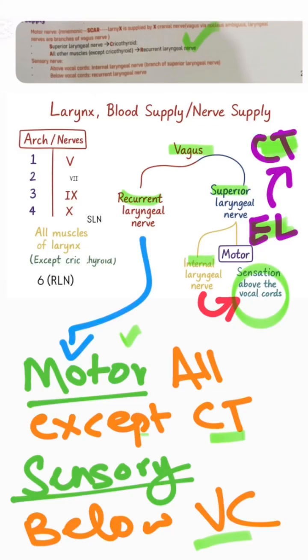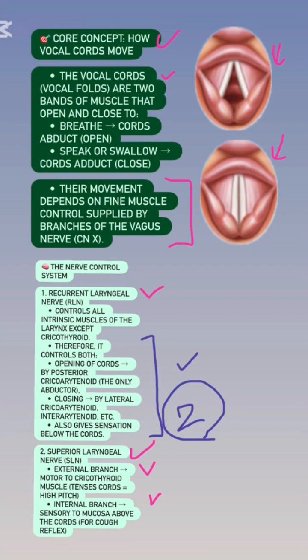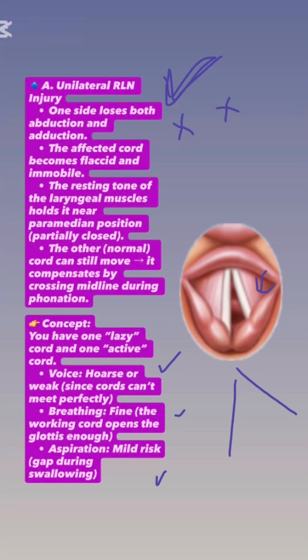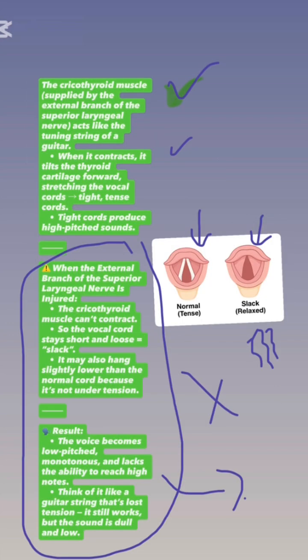Blood supply and nerve supply of the larynx, and what happens in unilateral and bilateral injury of the recurrent laryngeal nerve, how the vocal cords move and how the nerve controls them, and what happens in case of unilateral and bilateral recurrent laryngeal nerve injury.